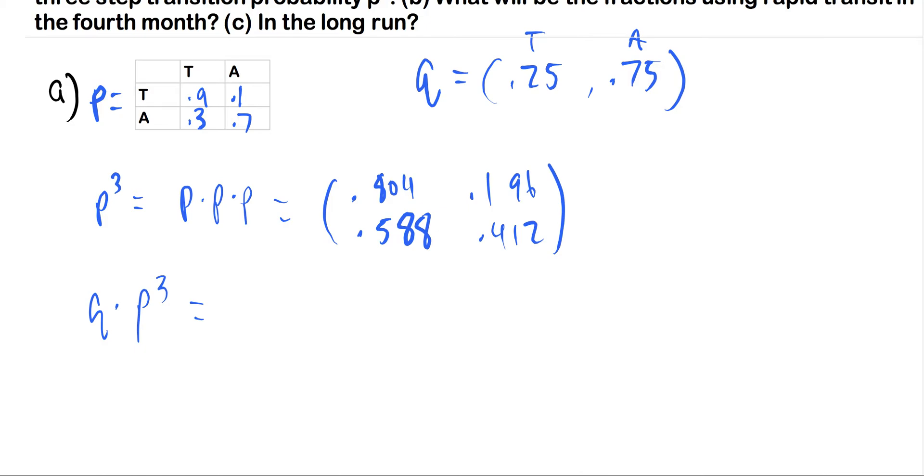And I will write this out this time. And once again, a little bit of vector matrix multiplication here. We're going to multiply this 0.25 by 0.804, multiply the 0.75 by 0.588, add those two numbers together. And then we're going to get the correlating number for this vector. You're going to do that one for each column.